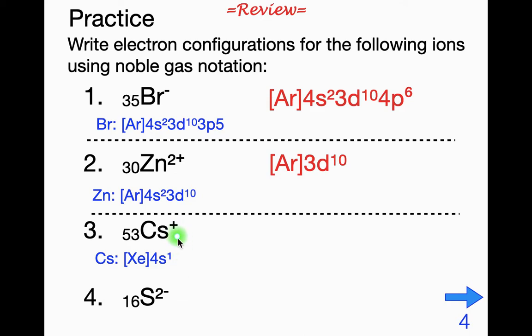Cesium, positive 1 charge, we would lose the 6s1. And remember we're not going to just put a noble gas in brackets and walk away. We need to go back to the noble gas before that and then complete it from there. So this would be krypton, 5s2, 4d10, 5p6.